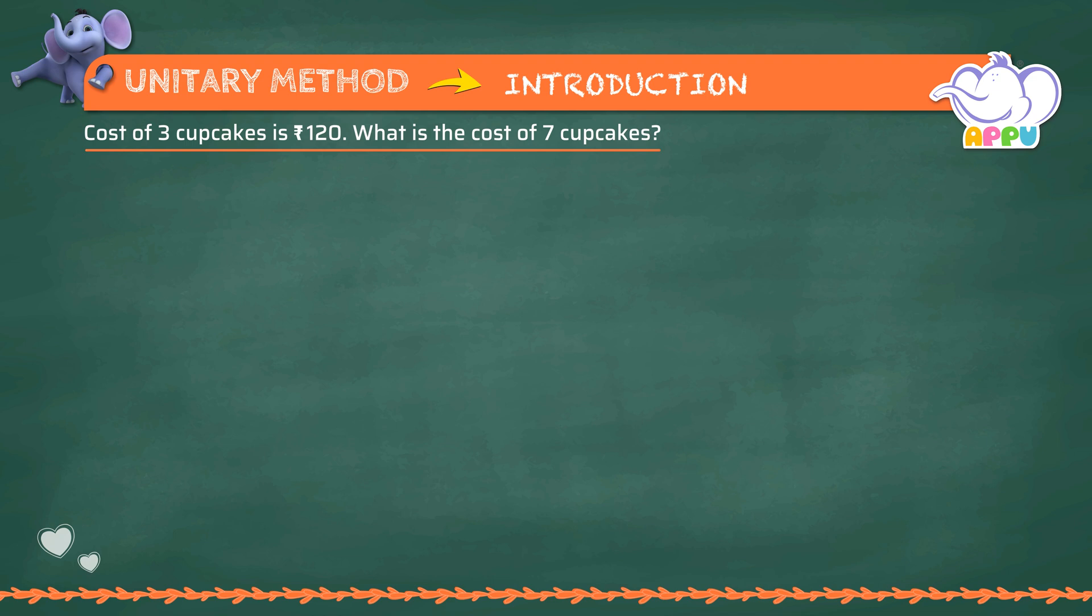Cost of three cupcakes equals rupees 120. To find the cost of one cupcake, we divide both sides by three: three cupcakes by three and rupees 120 by three.